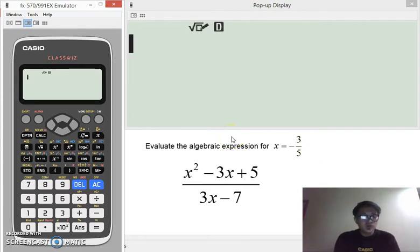Now, the usual way to answer this is to substitute the value negative 3 over 5 to x in the expression. And doing that will be like this.